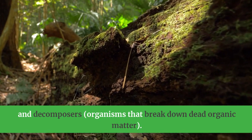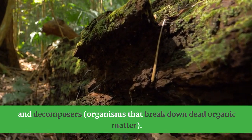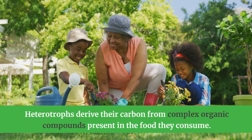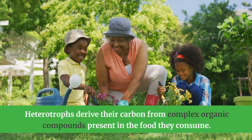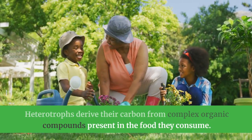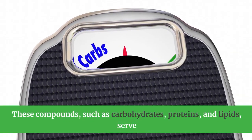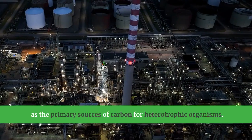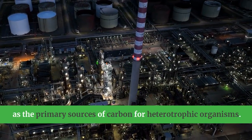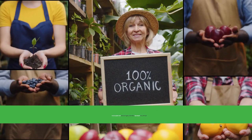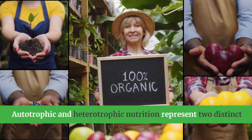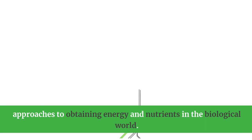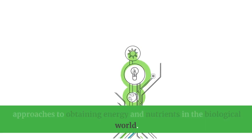Heterotrophs also include decomposers — organisms that break down dead organic matter. Heterotrophs derive their carbon from complex organic compounds present in the food they consume. These compounds, such as carbohydrates, proteins, and lipids, serve as the primary sources of carbon for heterotrophic organisms. Autotrophic and heterotrophic nutrition represent two distinct approaches to obtaining energy and nutrients in the biological world.